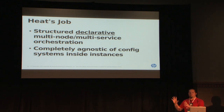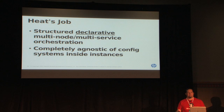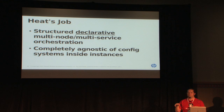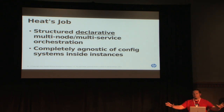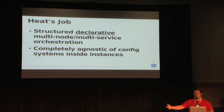Heat's job in deploying OpenStack under Triple O is to be a structured, declarative, multi-node, multi-service orchestration. If we go back to the iRobot analogy, Heat is the iRobot. We don't tell iRobot to go over there, then over there, get the dirt — you just turn on iRobot and declare 'clean.' You declare the architecture you want, all the infrastructure, the dependencies, the ordering, and Heat goes out and makes that happen.